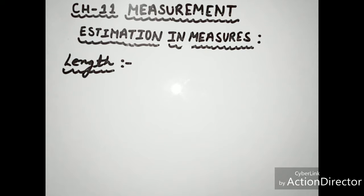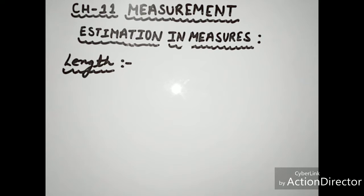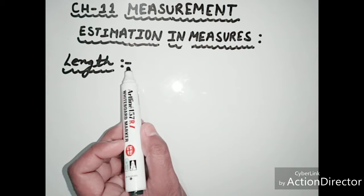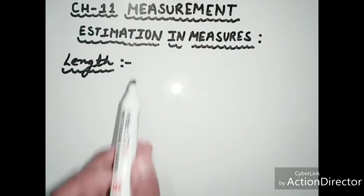For medium lengths, like what is the length of your study table or this whiteboard, we use meters. For very short lengths, we use millimeters — for example, like what is the length of this dash? The estimation measure of this dash is millimeters.